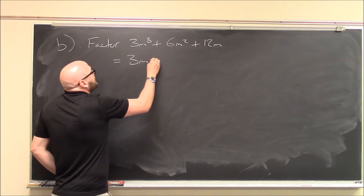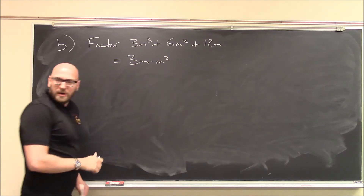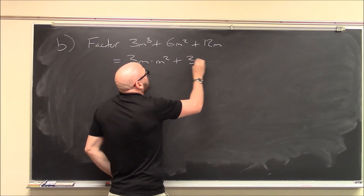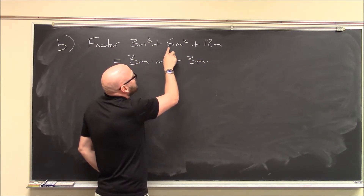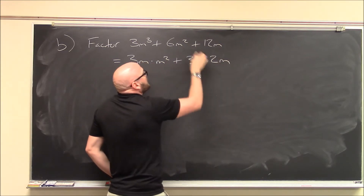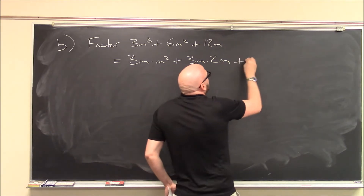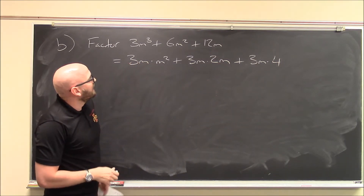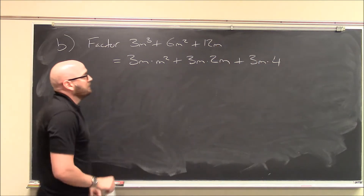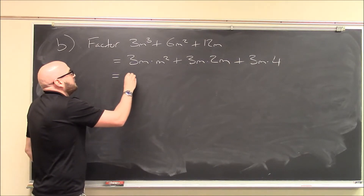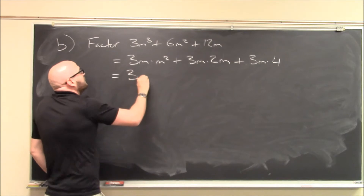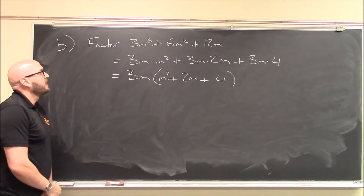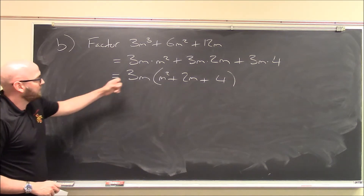This first term is 3m times m squared. The next term, 6m squared, is 3m times 2m. And 12m is 3m times 4. So if I factor this, I've got 3m common to every single term, giving 3m times m squared plus 2m plus 4. This polynomial is now factored as one polynomial times another.